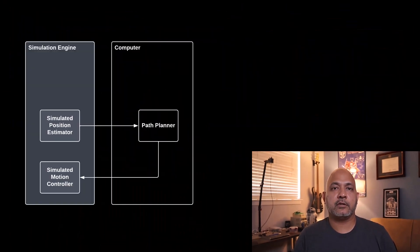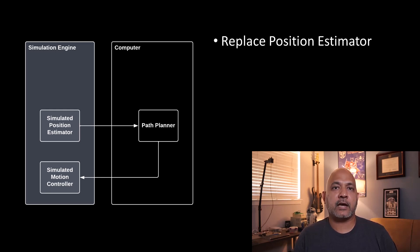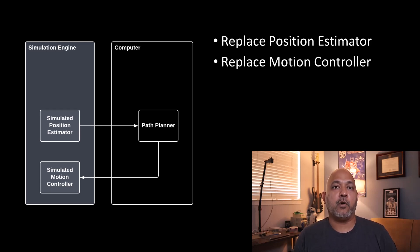Here's an example of how we would use simulation if we were trying to test our path planner. We may replace our position estimation algorithm with some simulated position, and we want to have the motion controller impact the position in the world.